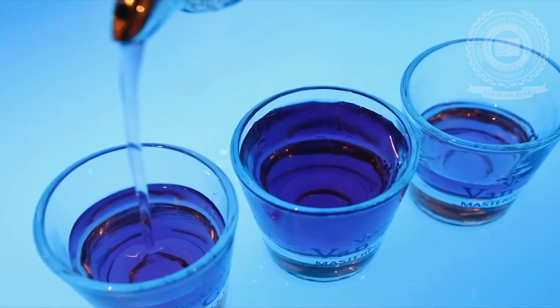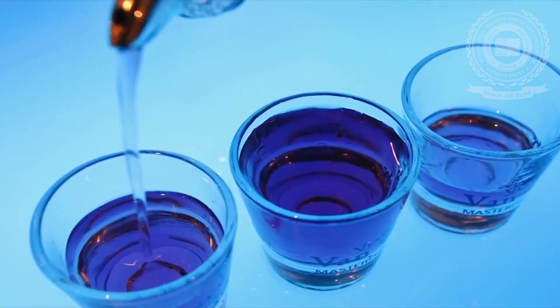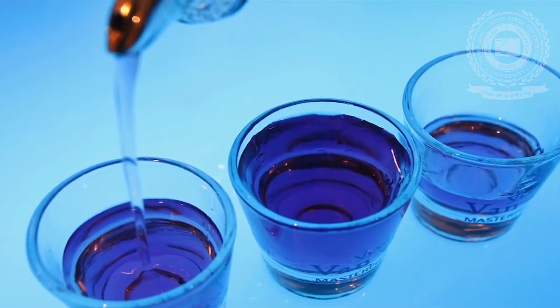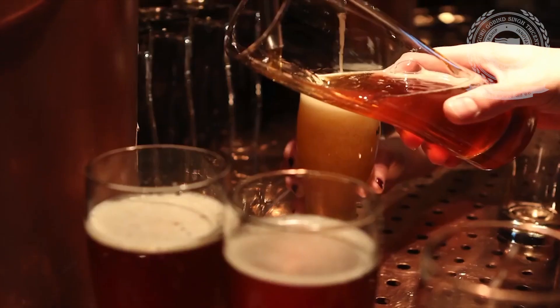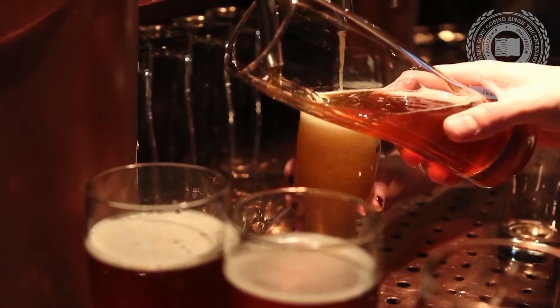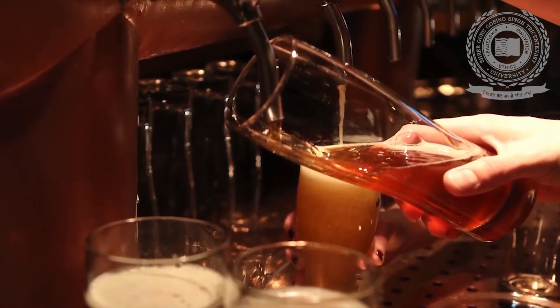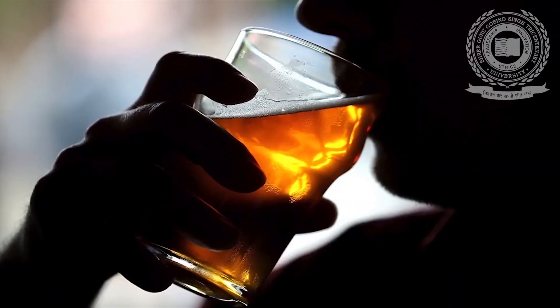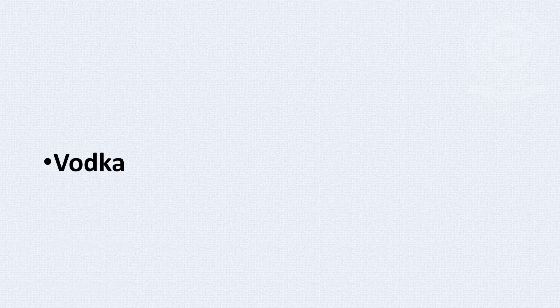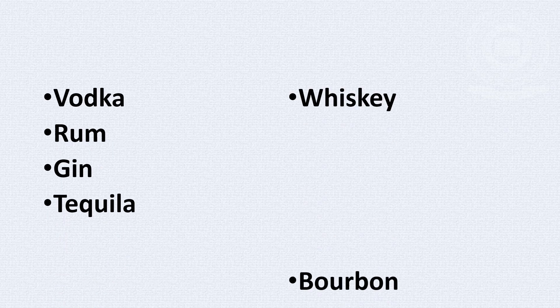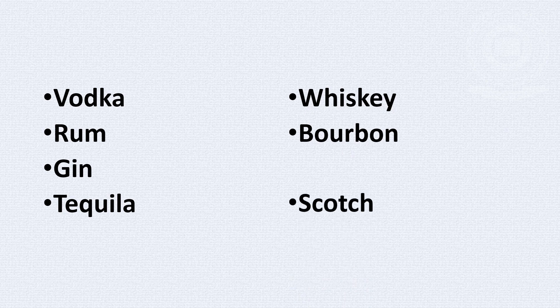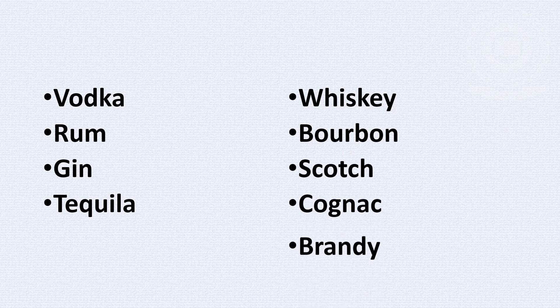Let us understand the different types of liquor and how they are made. There are nine types of liquors commonly used to drink. They are vodka, rum, gin, tequila, whiskey, bourbon, scotch, cognac and brandy.